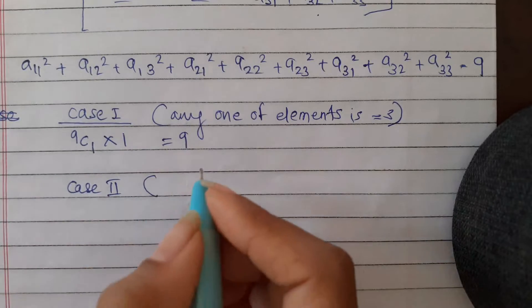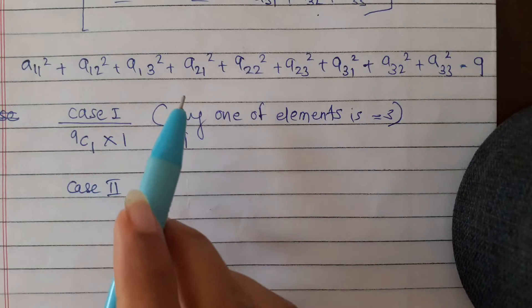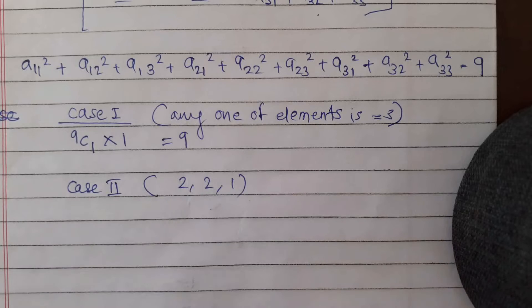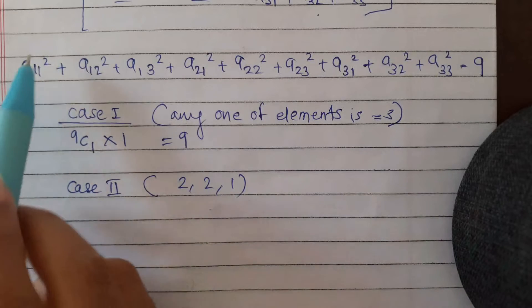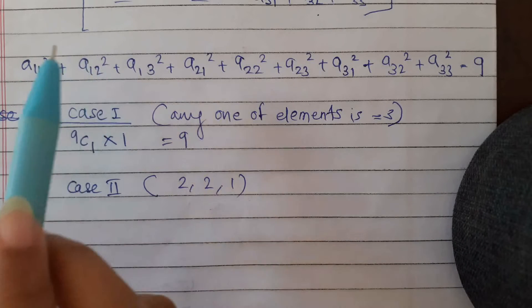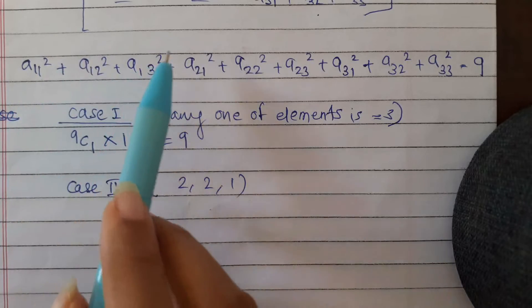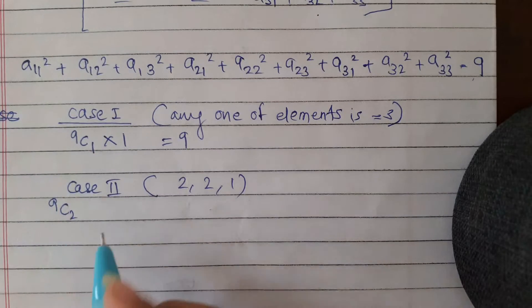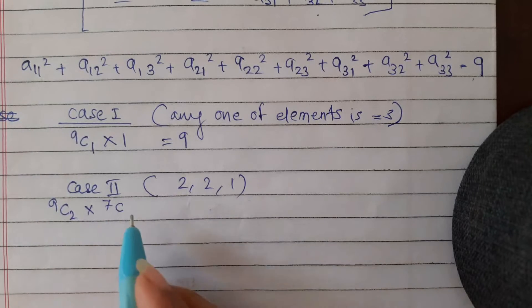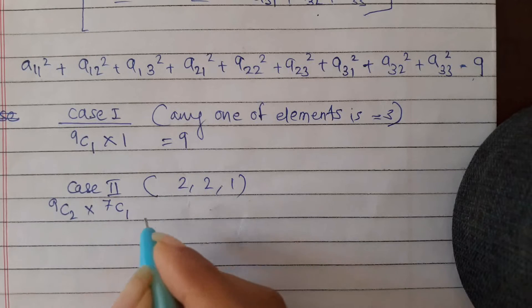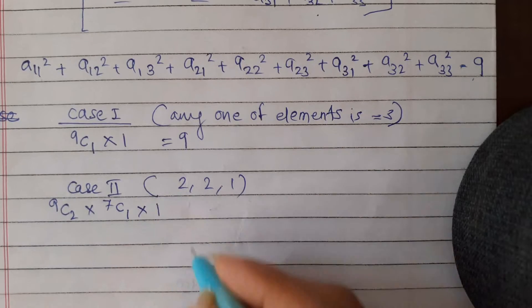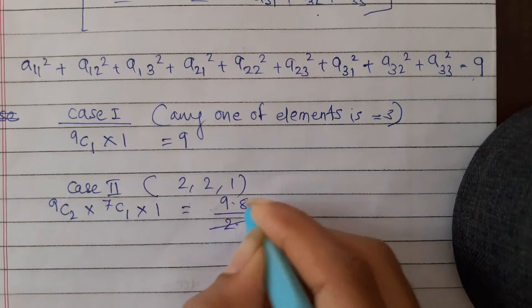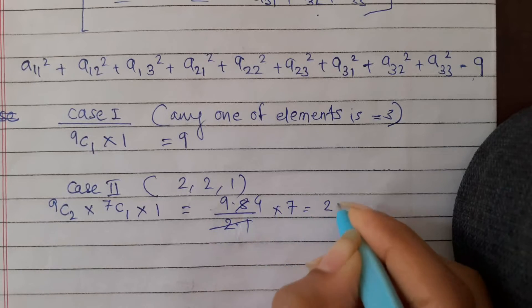Case 2: when any two elements are 2 and any one element is 1, with the rest being 0. That gives 2² + 2² + 1² = 4 + 4 + 1 = 9. The number of ways is 9C2 to choose the two 2s, then 7C1 to choose the one 1, giving 36 × 7 = 252.